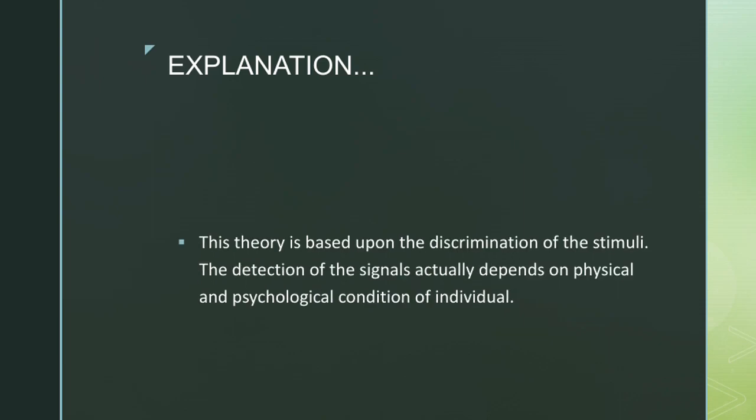The theory is based on the discrimination of stimuli — meaning the discrimination between the faint stimulus and background stimulation, differentiating between two stimuli. The detection of signals depends on our physical and psychological conditions. Physical conditions include prepotency, size, change, etc., while psychological conditions include interest, motivations, social suggestions, past experience, and expectations.